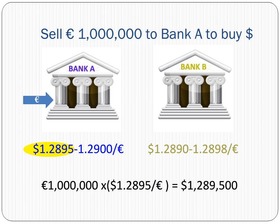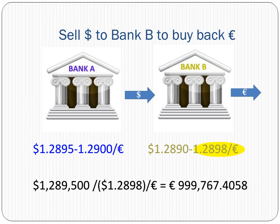What if we started with 1 million euros and went to Bank A first? The bank buys euros at the bid price and we receive 1,289,500 dollars. We then sell the dollar amount to Bank B. Since the bank is selling euros, it will convert the dollars at the ask rate, so we wind up with 999,767.41 euros. Again, no luck with arbitrage profit.